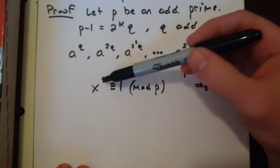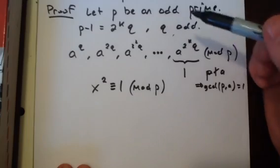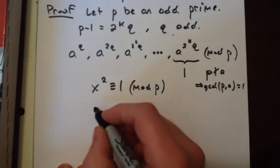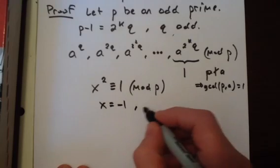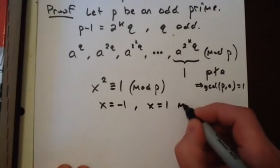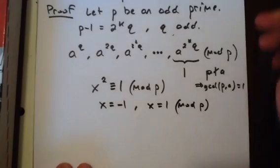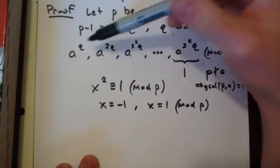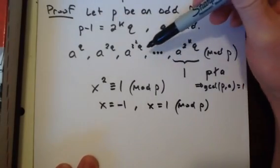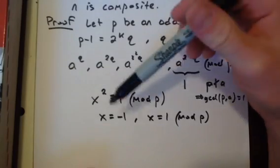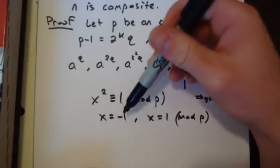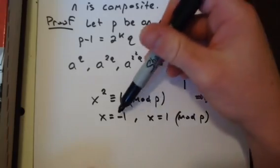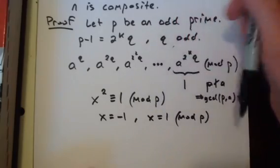So now let's consider the equation x squared congruent to 1 mod p. Now we know from experience there's only two solutions. And they are x equals minus 1, and x equals 1 mod p. So what this tells us is, if there is a number that's not 1 on this list, then eventually negative 1 has to show up because when it's squared, it becomes 1. Only these two numbers squared become 1 mod p.